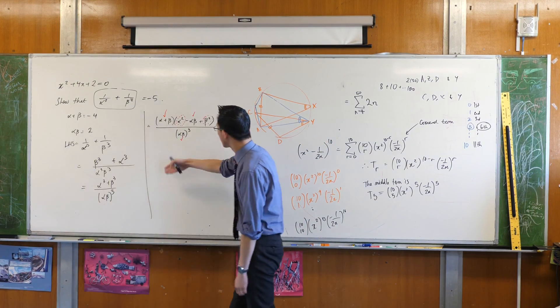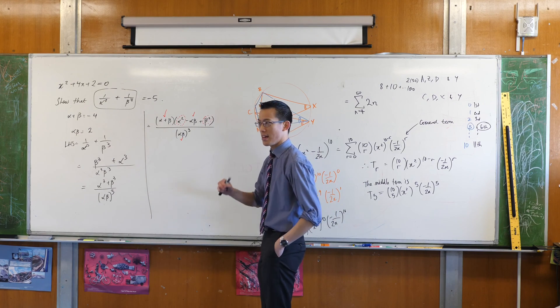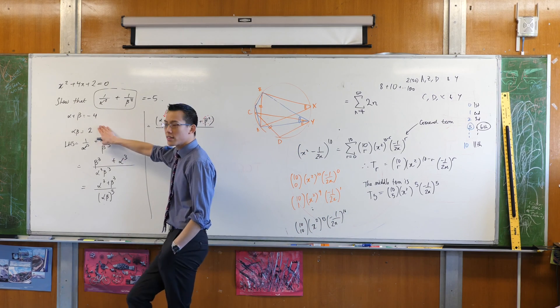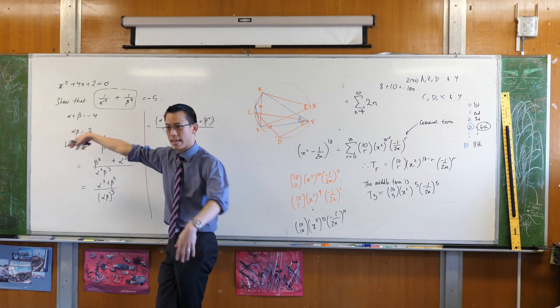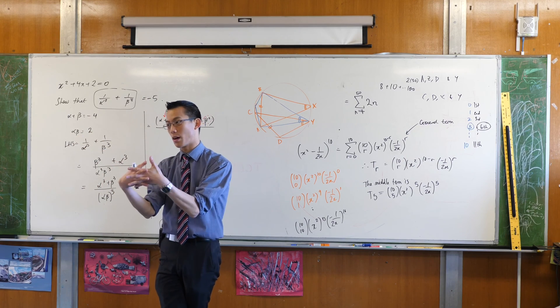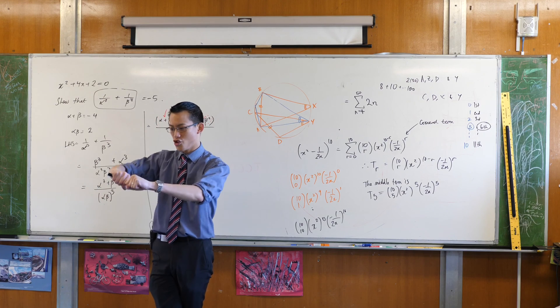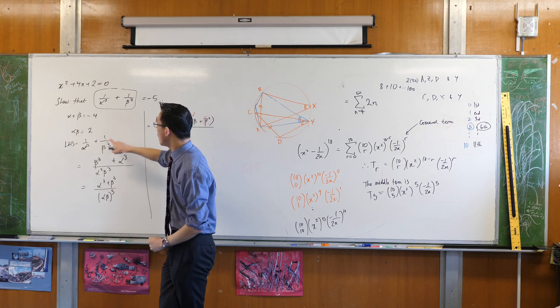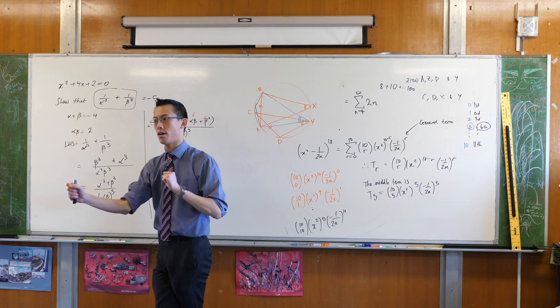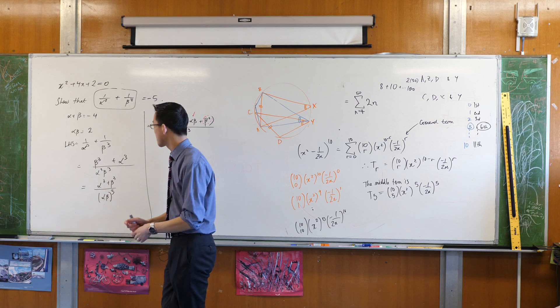To get an alpha squared and a beta squared, can you see that squaring this guy is not good enough? Because the alpha squared and the beta squared will then be tangled up together. You'll get alpha squared times beta squared and you can't separate them. So therefore I'm going to have to do something with this guy because they have the alpha and the beta separately.